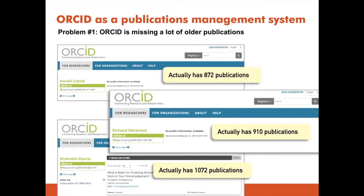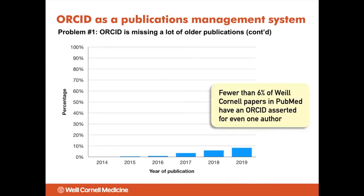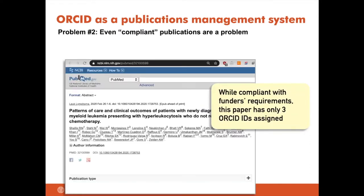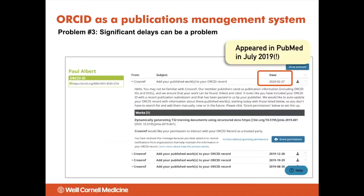So in what way is this system not fully satisfying the use cases I mentioned? First of all, ORCID does miss a lot of older publications. Our three most prolific scholars at Weill Cornell are missing some thousands of publications. In fact, if you look over the past five years, fewer than 6% of Weill Cornell papers have an ORCID asserted for even one author — and this is not to say all these papers have ORCIDs for all their authors. You can be compliant with funders' requirements to use ORCID and only have a subset of authors assigned ORCID identifiers. Significant delays are also a problem — one paper appeared in PubMed in July 2019 and only made its way into ORCID in February of 2020.